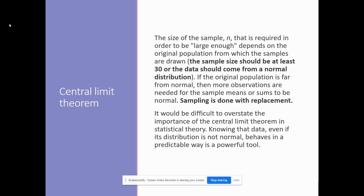When we talk about sample size, N is supposed to be large enough. For us, we're going to say the samples need to be 30 or over, or the sample has to have a pretty bell-shaped curve. As we move through inferential statistics, you'll see that a lot — is my sample size 30 and above, or is the data normally distributed? If the population is far from normal, we need more observations for either the sample means or the sample sums. The sampling is done with replacement. It would be difficult to overstate the importance of this — it is such a powerful tool and we use this all the time in statistics.